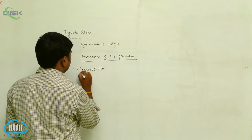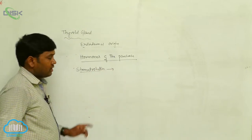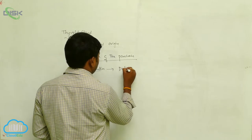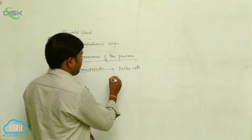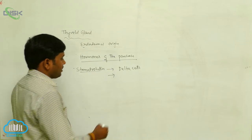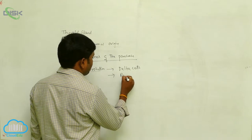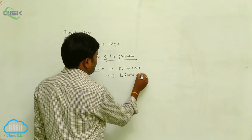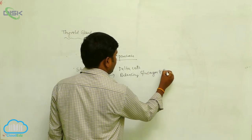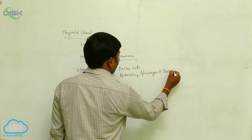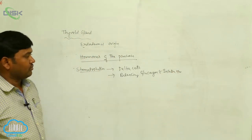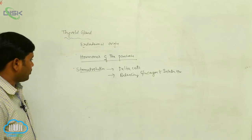The next hormone is somatostatin. This hormone is derived from the delta cells, and its main function is the balancing of glucagon and insulin hormones.